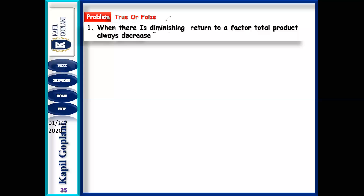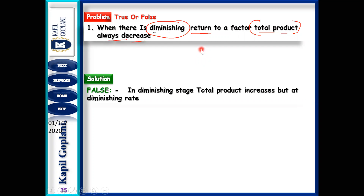True and False: When there is diminishing return to a factor, TP always decreases. When your second stage is going on, does TP decrease or increase? TP decreases? No — TP increases, but at a diminishing rate.